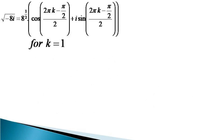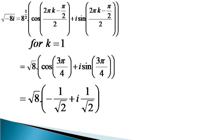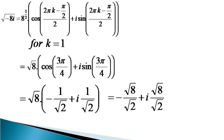For the second root, we use k = 1, and the square root becomes equal to √8 · [cos(3π/4) + i sin(3π/4)]. This equals √8 · [−1/√2 + i/√2], which is equal to −√8/√2 + i·√8/√2, giving us −2 + 2i.